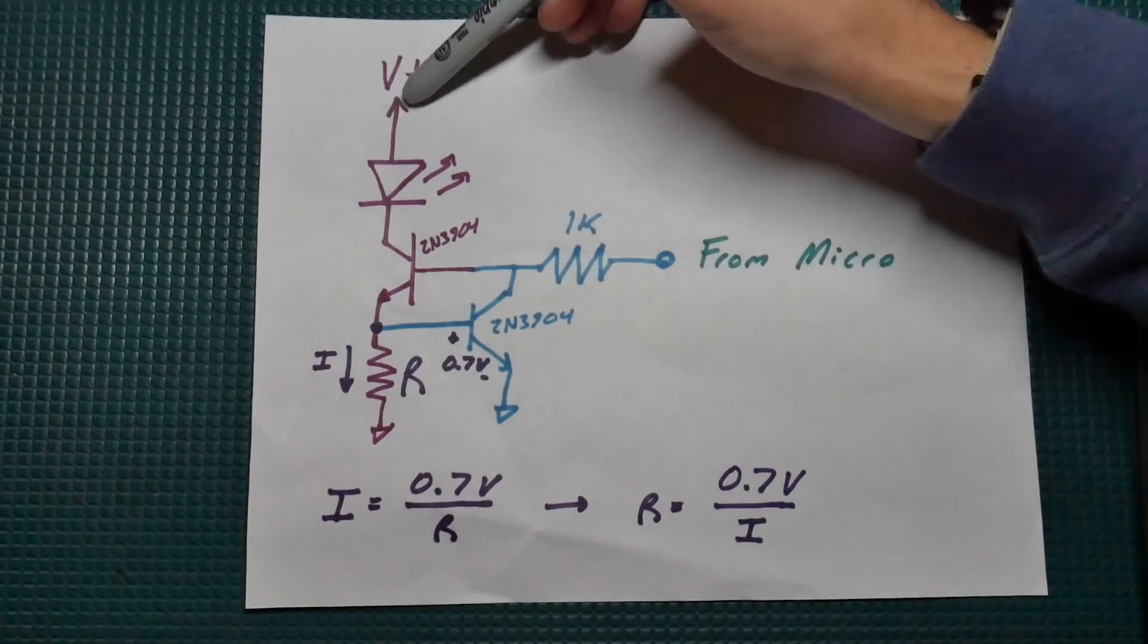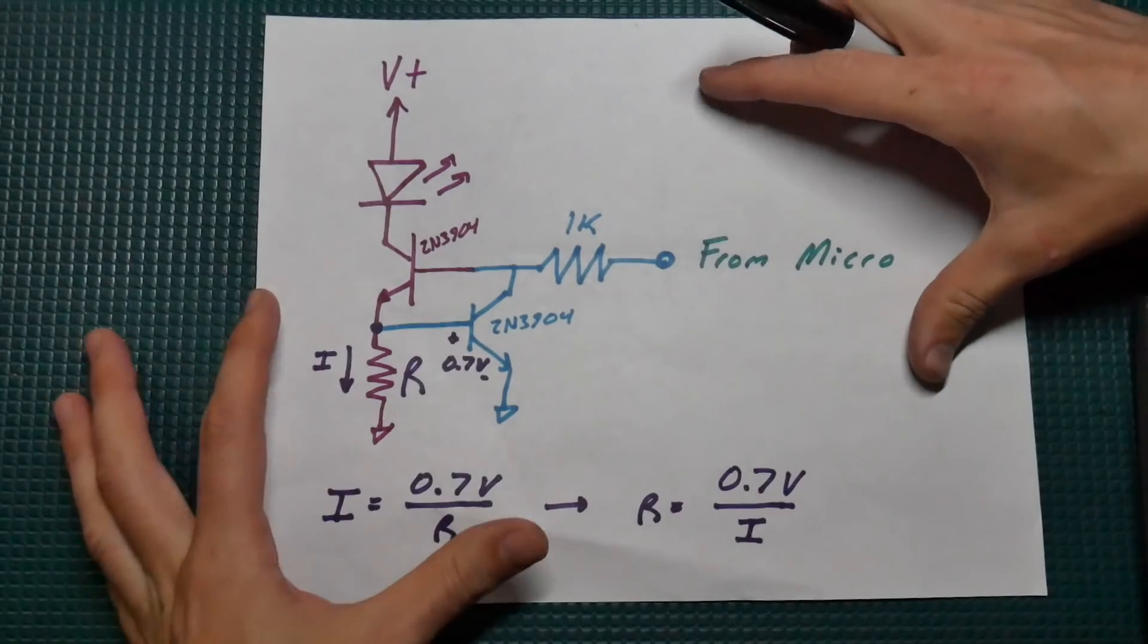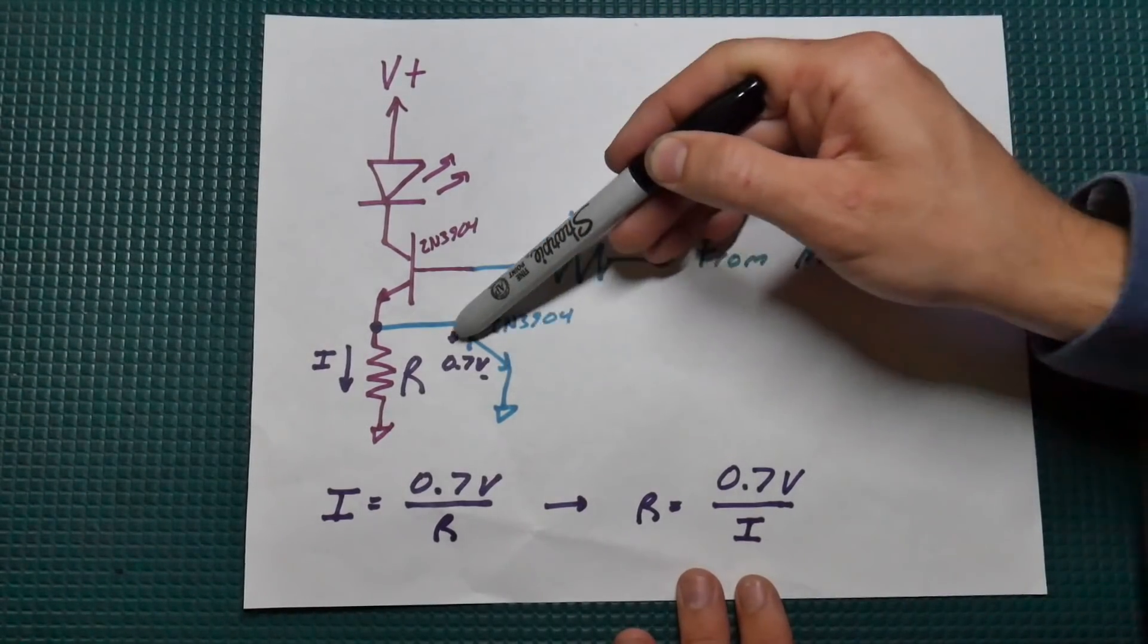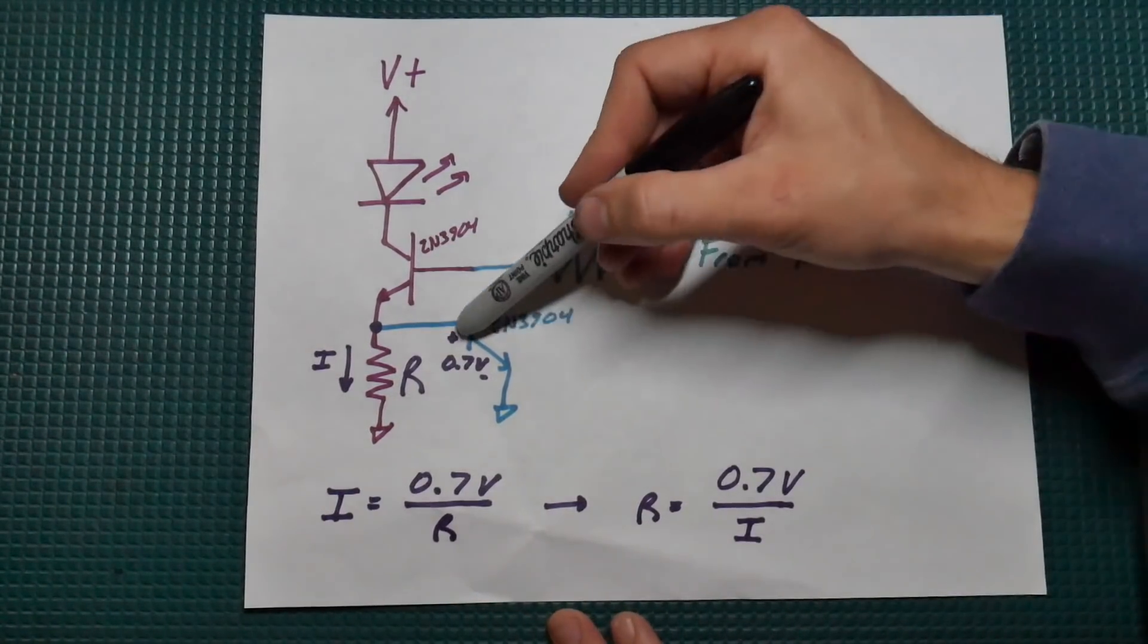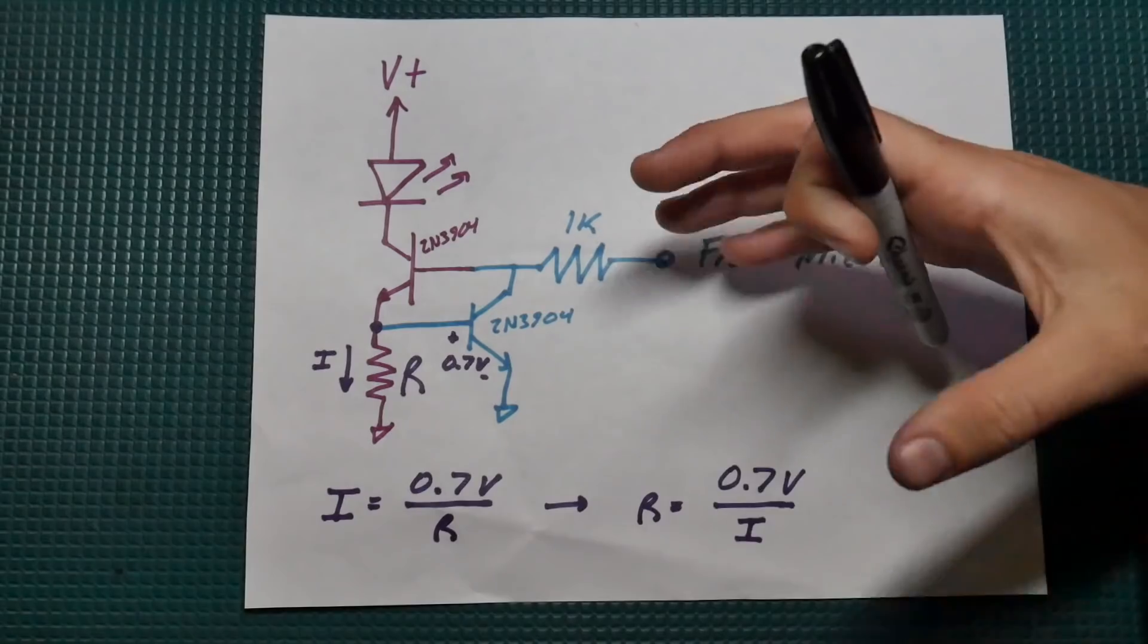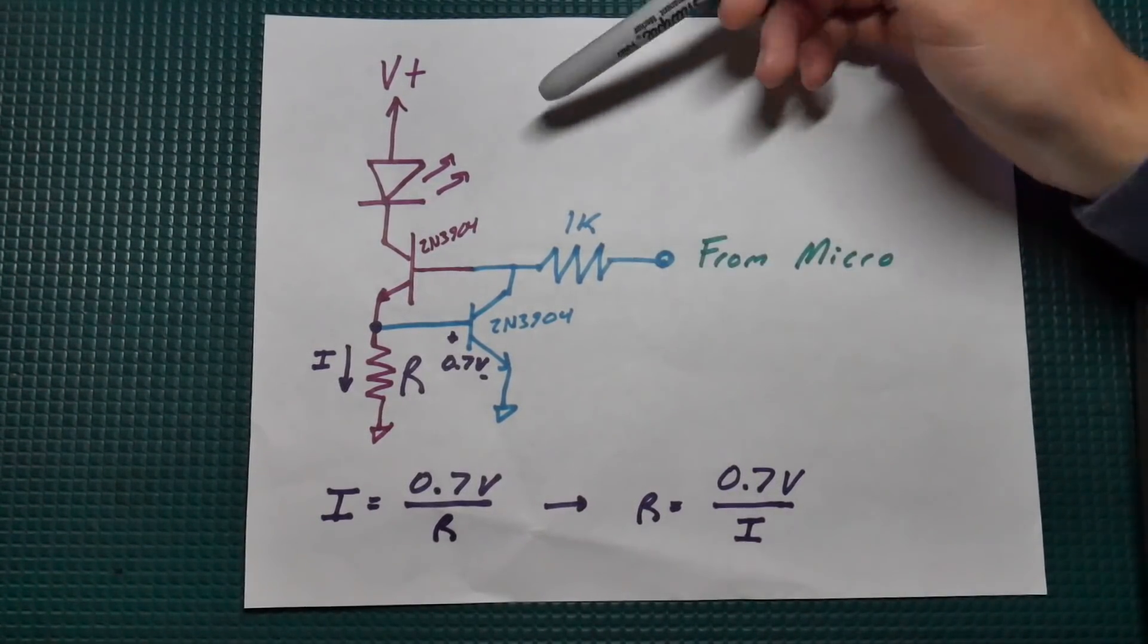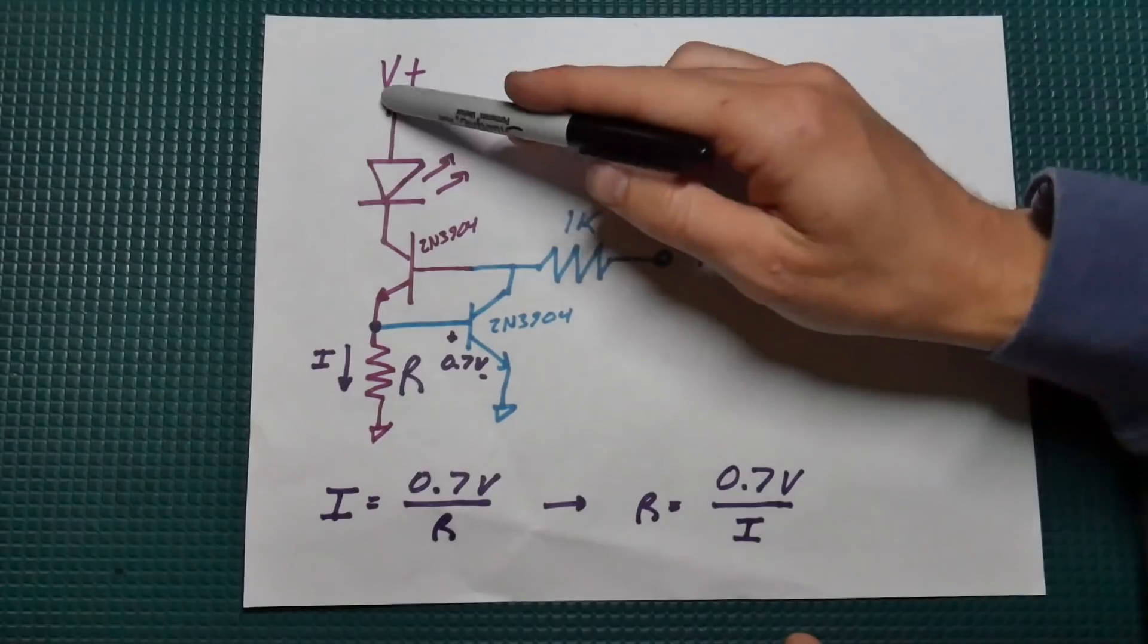So as you can see here, we're actually regulating on the low side of this load. So this is a constant current sink. If we're regulating up here at V plus, this would be a constant current source. So if you just kind of look at this, it'll kind of make sense how it works. So this blue transistor here has the V base to emitter junction voltage here of about 0.7 volts. Now, I did say this is quick and dirty, and that's because this voltage here is not precise.